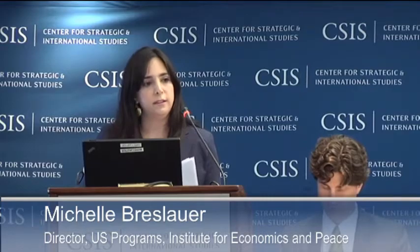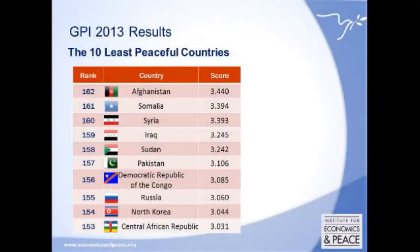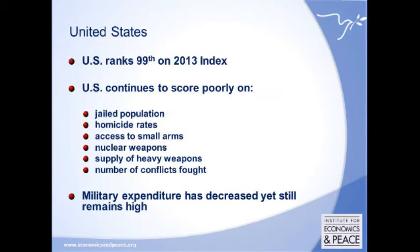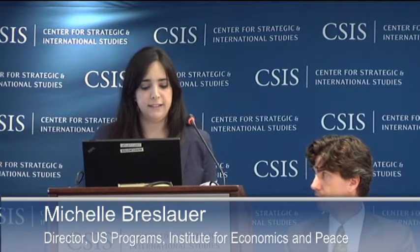Looking at the least peaceful countries, Afghanistan is the least peaceful country this year. The countries at the bottom have been there since the index was first launched in 2007, and they tend to stay there. Seven of the ten scores have deteriorated. Afghanistan is now less peaceful in the 2013 index than Iraq was in 2008. The United States ranks 99th on the index. Our high incarceration rates, high homicides, and availability of small arms also affect the U.S. score — not only international involvement and militarization.